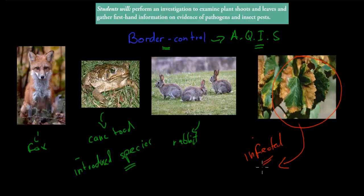AQIS will make sure we can find these infected plants. The easiest way is just not allowing plant and animal products to enter, but they have to inspect all different plants to find different types of pathogens which might be on the actual plants, to see if they are diseased or not. So this is what you're going to do in this experiment. Students will perform an investigation to examine plant shoots and leaves, and gather information on evidence of pathogens and insect pests — more or less doing the job of AQIS.